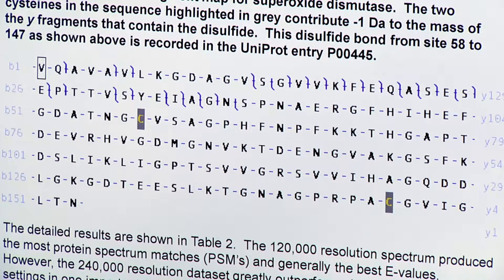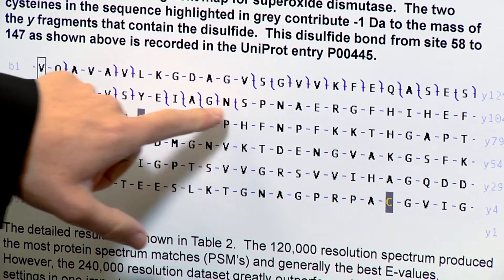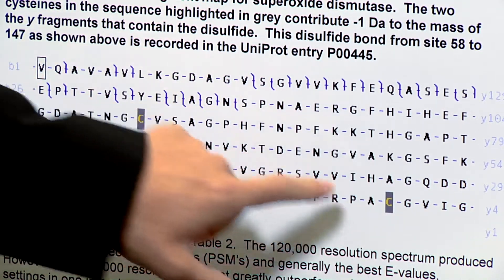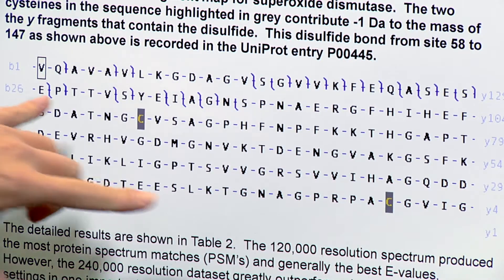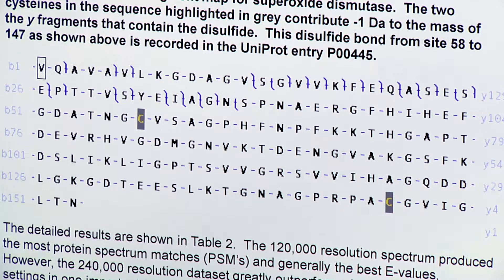we found that this cysteine and this cysteine right here were involved in a disulfide bond, changing the mass of the protein by two Daltons, and then all these fragments here, these are Y ions, contain this minus two Daltons modification. So we identified that a disulfide bond was present, and we identified that these two cysteines were actually involved in there.